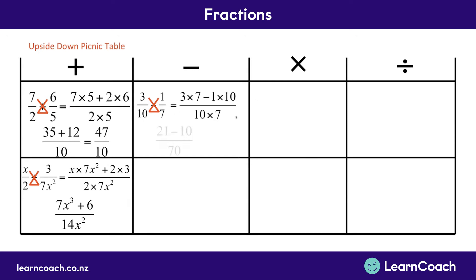Simplifying this down, we've got 3 times 7 is 21, minus 1 times 10, which is 10, all divided by 10 times 7, which is 70. And simplifying the top, we have 21 minus 10, which gives us 11 over 70, and we can't simplify this down any more than that.